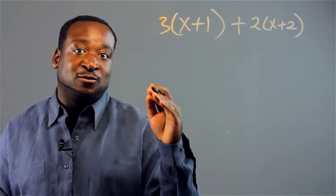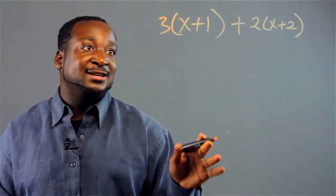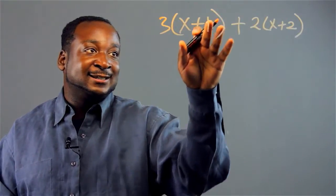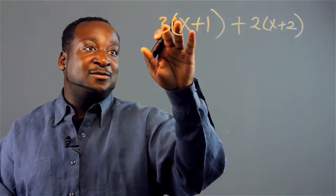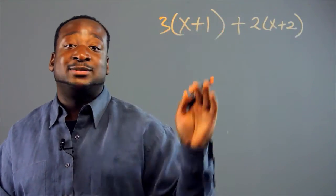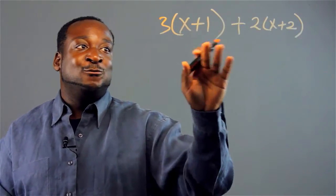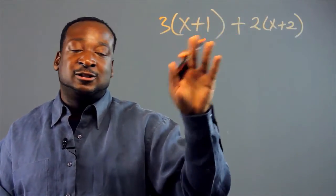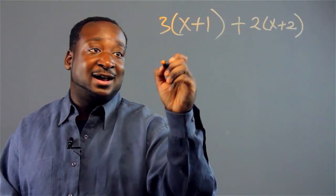Sometimes when people are rushing and working fast, they might just take 3x and forget about multiplying the 3 times the 1. So you want to hurry distribute the coefficients to the brackets as soon as possible.